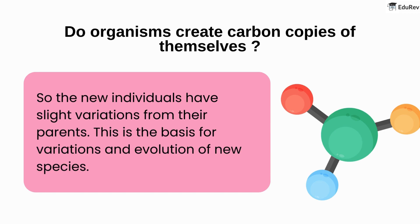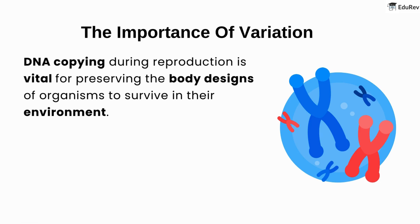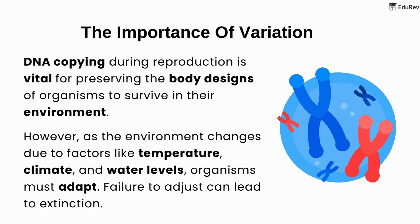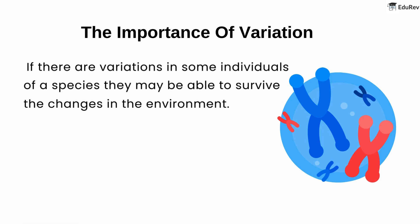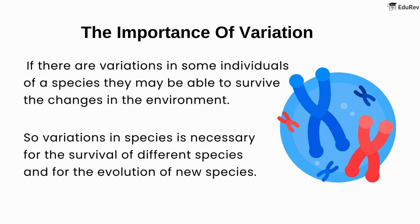This is the basis for variations and evolution of new species. Now let's look at the importance of variation. DNA copying during reproduction is vital for preserving the body designs of organisms to survive in their environment. However, as the environment changes due to factors like temperature, climate, and water levels, organisms must adapt. Failure to adjust can lead to extinction. If there are variations in some individuals of a species, they may be able to survive environmental changes. So, variations in species are necessary for the survival of different species and for the evolution of new species.